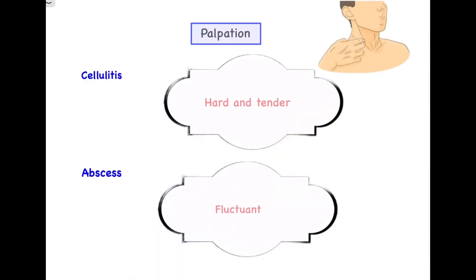The fifth differentiating point is based on palpation. Cellulitis is hard and tender on palpation — it has a cardboard-like consistency. Abscess, on the other hand, is fluctuant — fluctuation can be elicited in abscess but cannot be elicited in cellulitis.